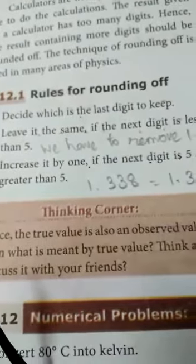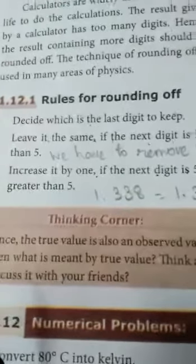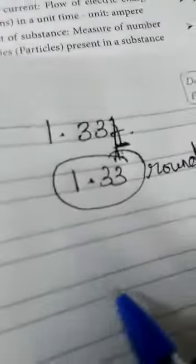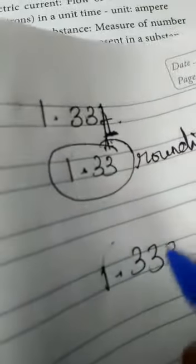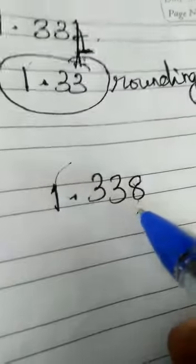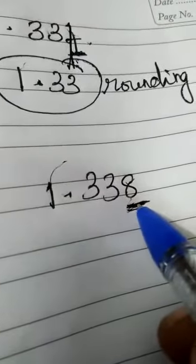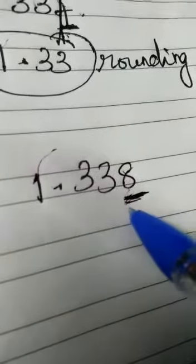Next rule. Increase it by 1 if the next digit is 5 or greater than 5. Any number, you find 3.38. You have to select the last digit number. This last digit number is greater than 5.